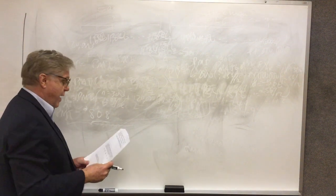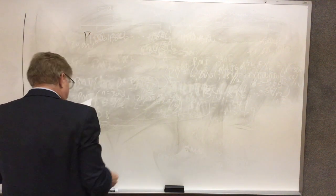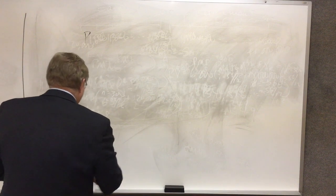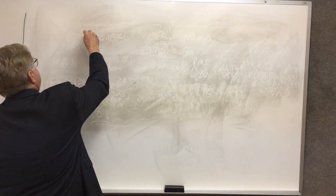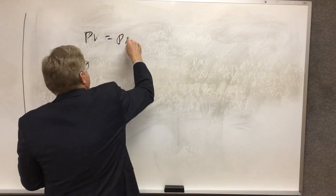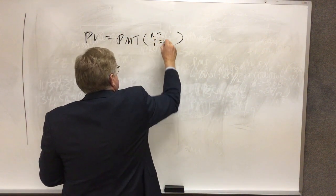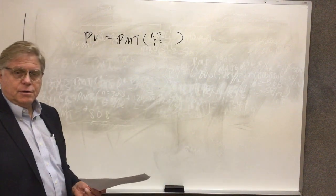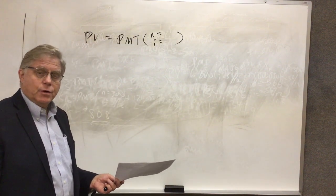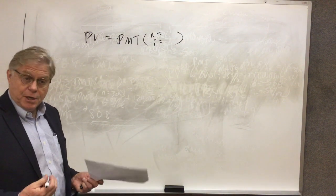It's called present value additivity. In the case of this stream of payments that we're dealing with, we have an annuity and we have a lump sum. We could solve for these individually and add them together, and get the sum of those.